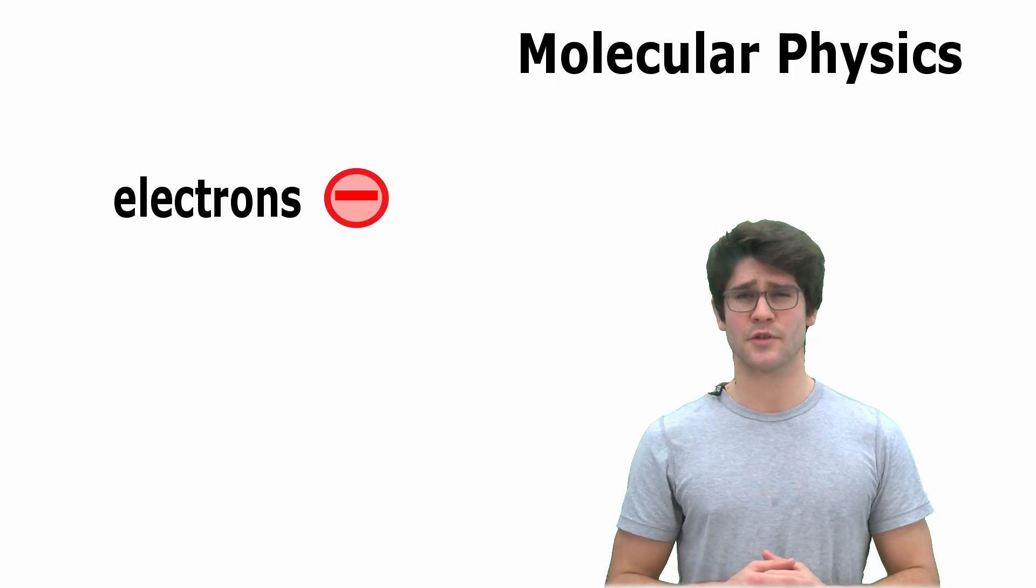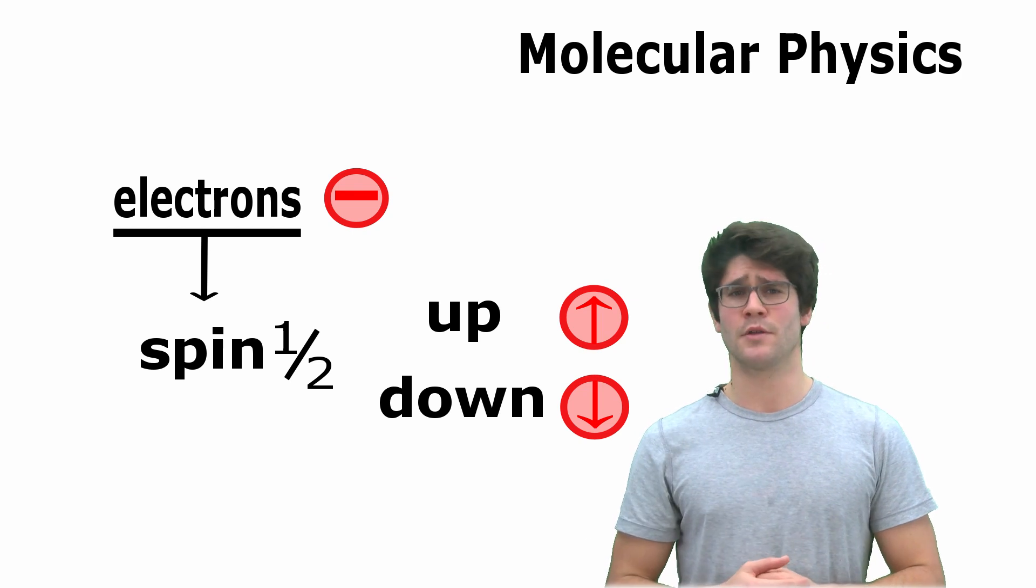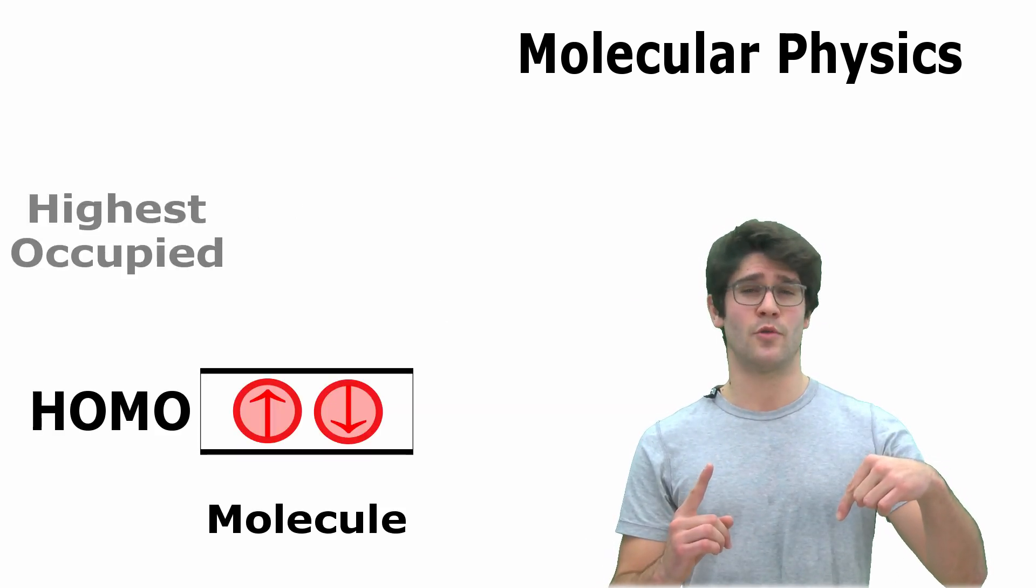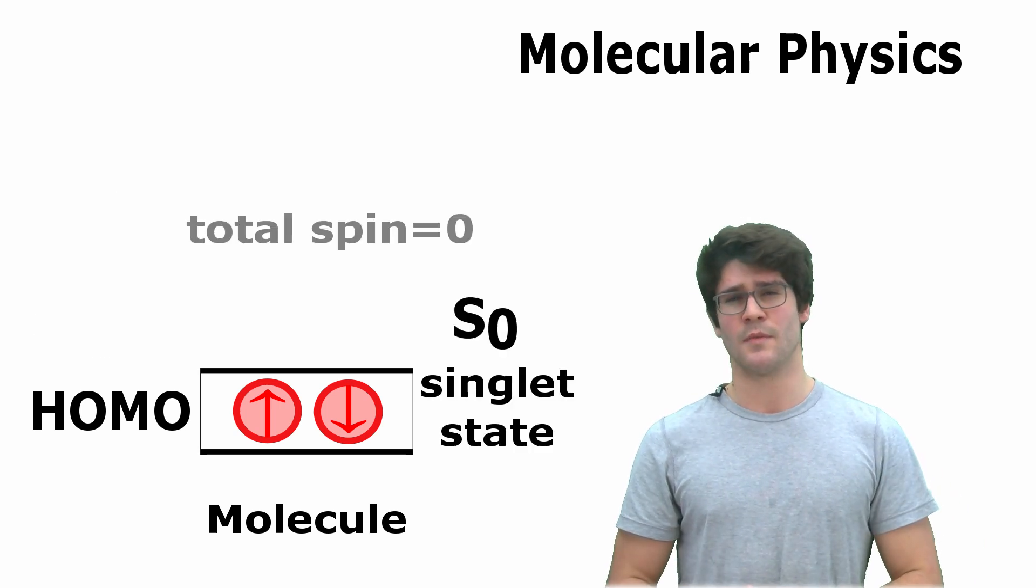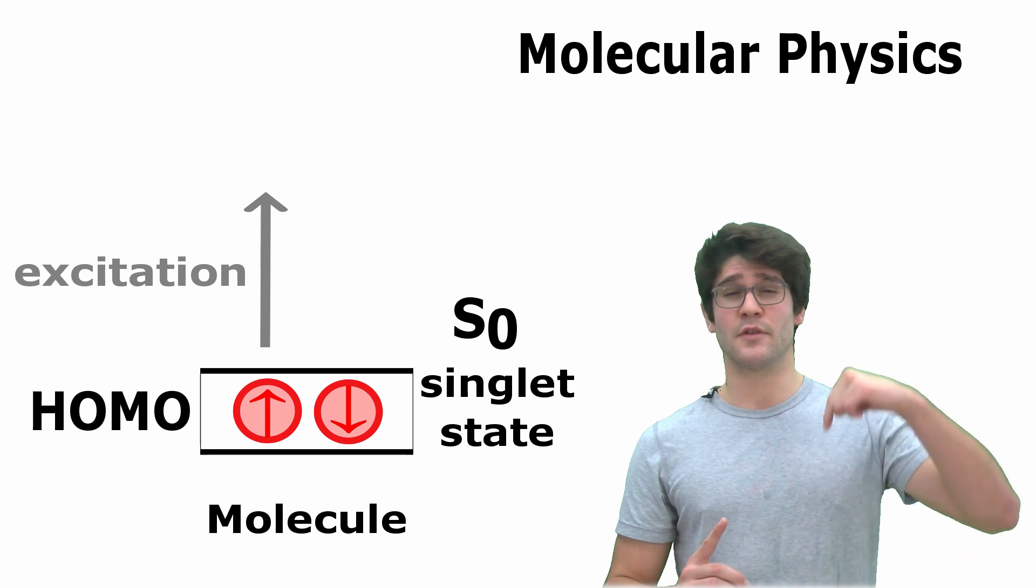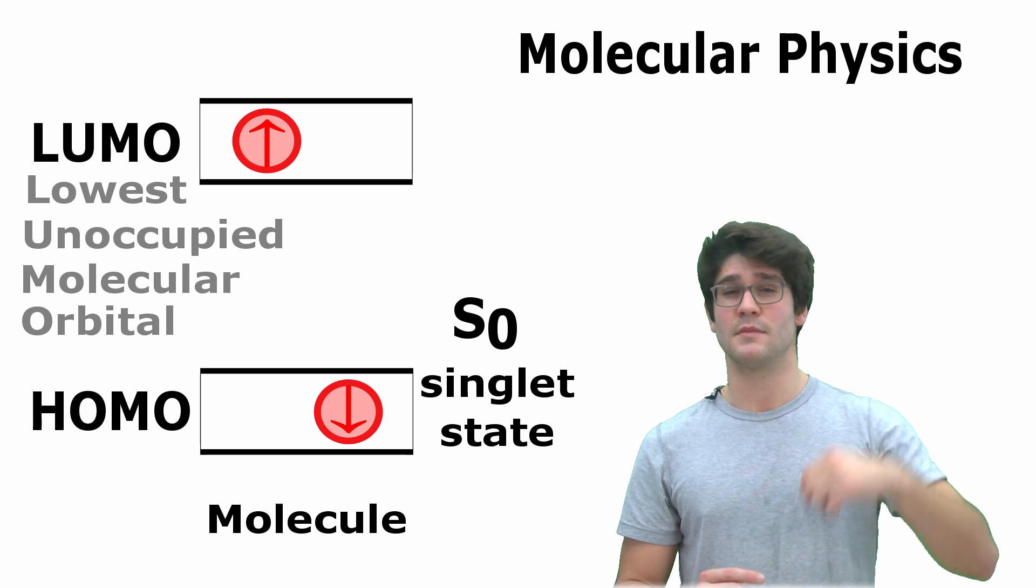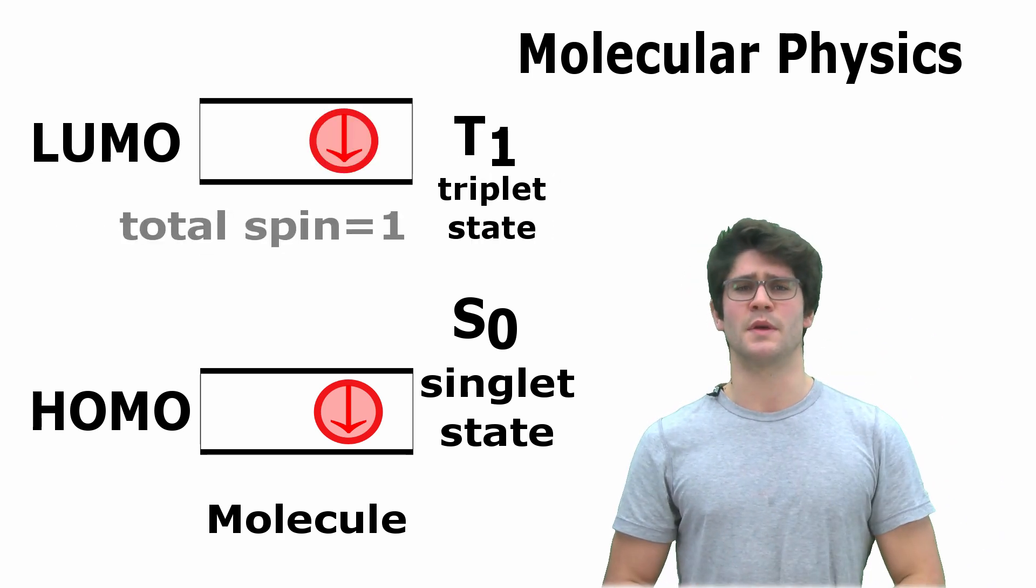Before we go further, some molecular physics. Electrons have spin of one half, up or down. In a molecule, two electrons with opposite spins reside in the highest occupied molecular orbital, giving a singlet, with total spin zero. When excited, an electron is raised to the lowest unoccupied molecular orbital, and now the spins may be opposite, giving a singlet, or paired, giving a triplet, with total spin one.